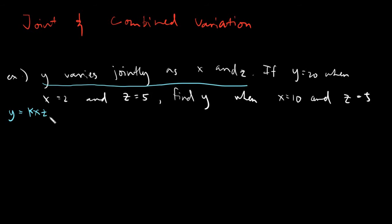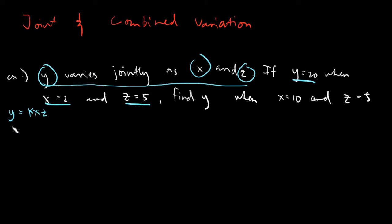Remember, joint variation is basically multiple direct variation. Our first set of variables: y is 20, x is 2, and z is 5 — that would be the first set, your sub 1s. y sub 1 is 20, x sub 1 is 2, and z sub 1 is equal to 5.